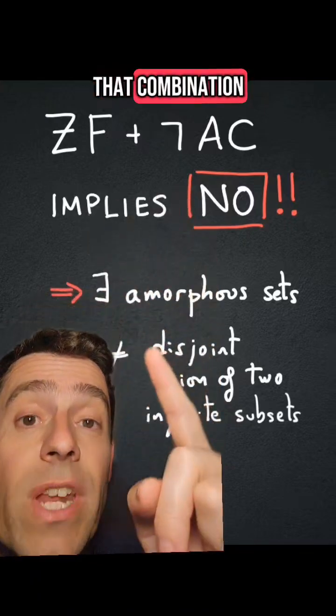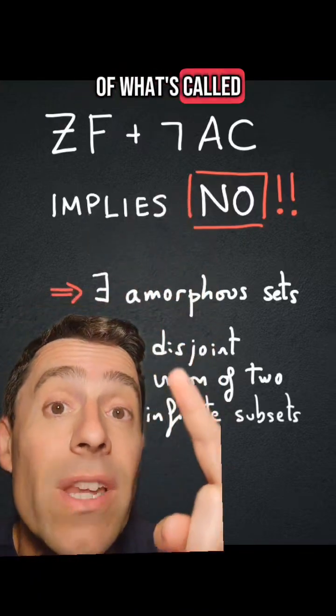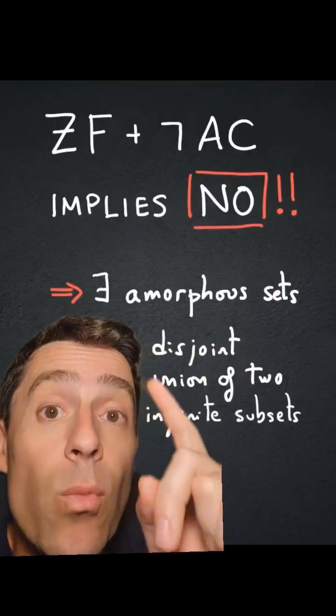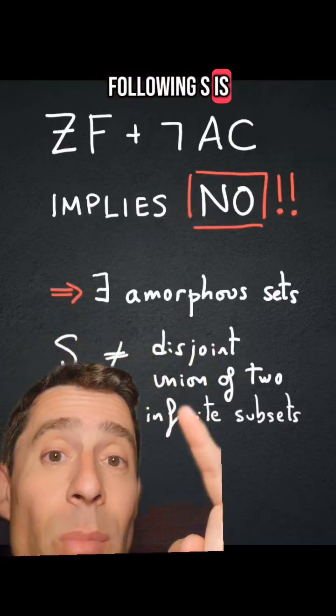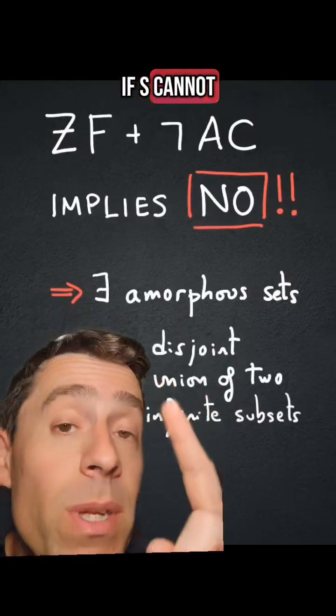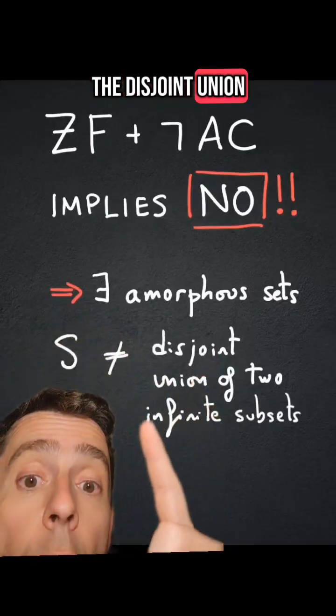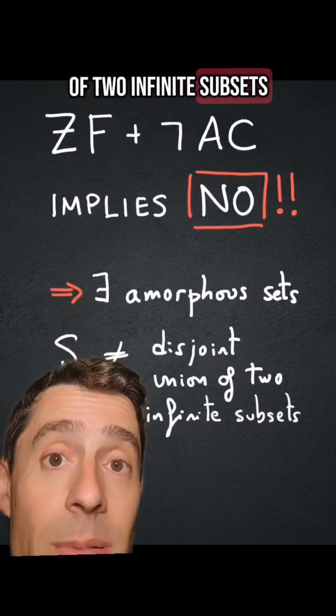It turns out that that combination implies the existence of what's called amorphous sets, which are the following: S is amorphous if S cannot be written as the disjoint union of two infinite subsets.